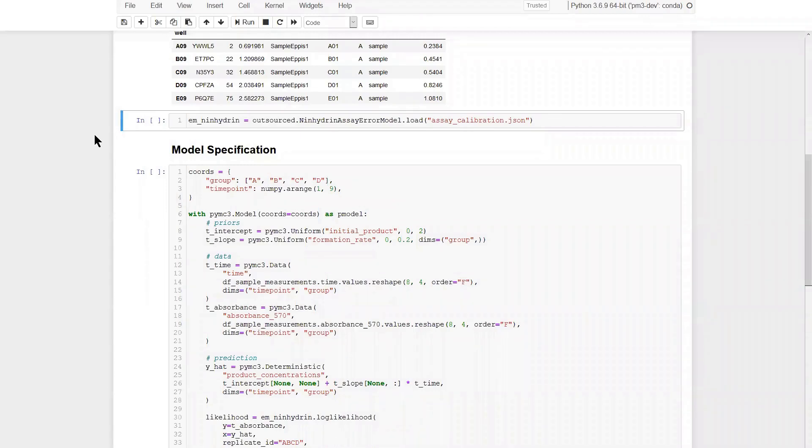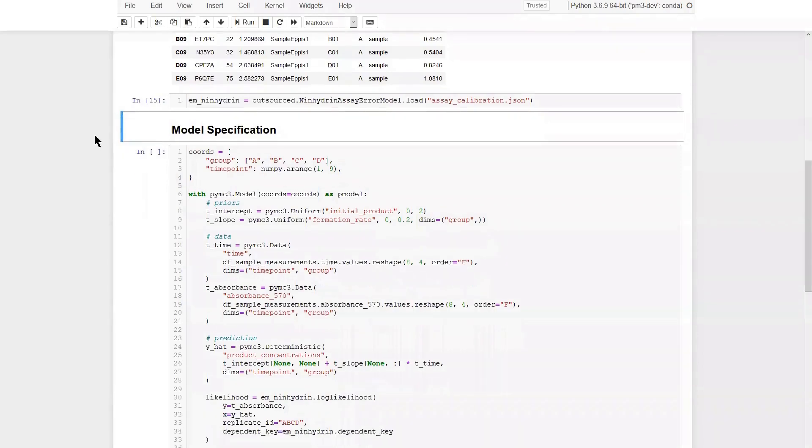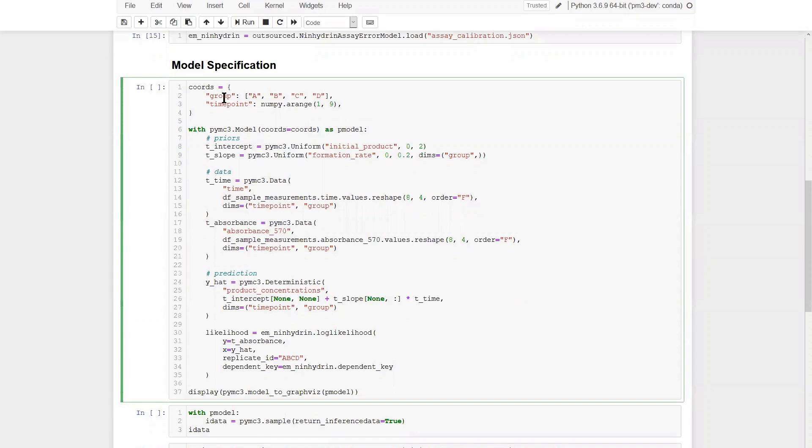After loading our data into a data frame, we can instantiate the error model from the save file. For the definition of the PyMC3 model, we will pass coordinates. This makes it easier to associate the dimensions in the sampling result. The multilevel regression requires an intercept and a slope. The intercept corresponds to the initial product concentration of the experiment. The slope corresponds to the product formation rate. Because we have four time series, we name the dimensions as group, which means that we will have a slope variable with size 4. The time and absorbance variables are passed into PyMC3 data containers. This way, they are also kept into the inference data, which we will get back from the sampling. Furthermore, they are reshaped to be of dimension time point times group, which makes it easier to do the prediction in a single line.